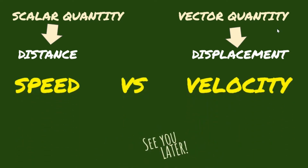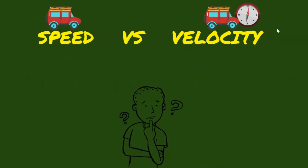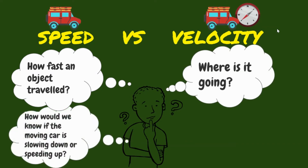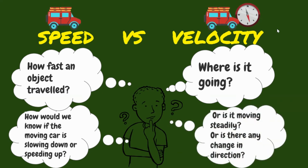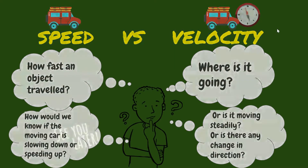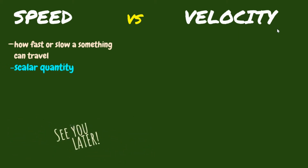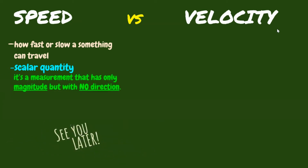Speed and velocity. Since motion is a change in position, we have a lot of questions about it. For example, how fast an object traveled? Where is it going? How would we know if the moving car is slowing down or speeding up, or is it moving steadily, or is there any change in direction? Let's find out together. To start with, let's define speed. Speed measures how fast or slow something can travel, whether it is a person or an object. It is considered a scalar quantity, which means you only measure its magnitude.